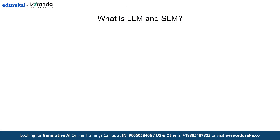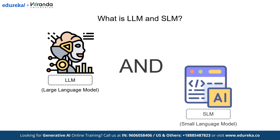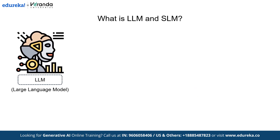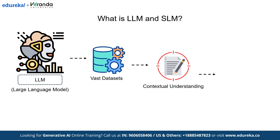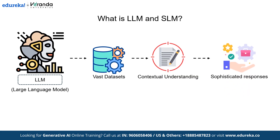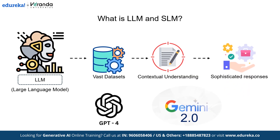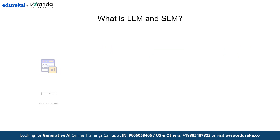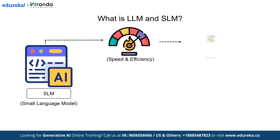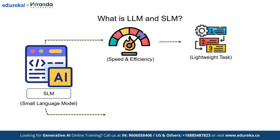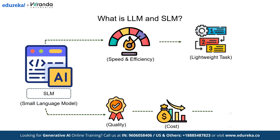Now let's dive right in with our first question: what exactly are LLMs and SLMs? LLMs, which are large language models, are powerful AI systems trained on vast datasets, offering deep contextual understanding and sophisticated responses. Models like GPT-4 and Gemini 2.0 are the examples. Whereas SLMs, like DistilBERT or Tiny GPT, are streamlined for speed and efficiency, excelling in lightweight tasks. Both serve distinct purposes, balancing quality, cost, and performance.